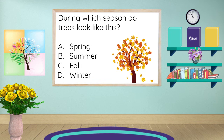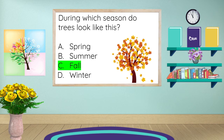During which season do trees look like this? Is it A, spring; B, summer; C, fall; or D, winter? Fall is the correct answer. That's when the leaves start to change color and they begin to fall. Hence the name 'fall' for the fall season.